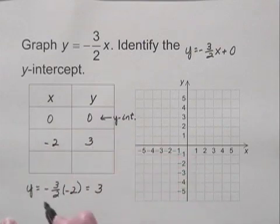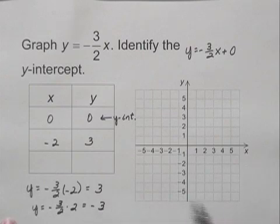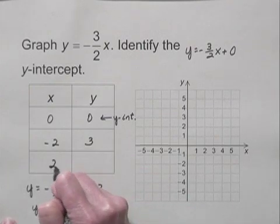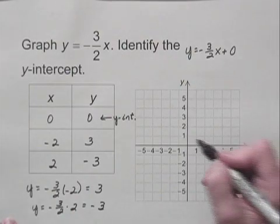And let's let x be 2. When x is 2, I have negative 3 halves times 2, which is equal to negative 3. So that gives me a third point, 2, negative 3. Now let's plot these points.